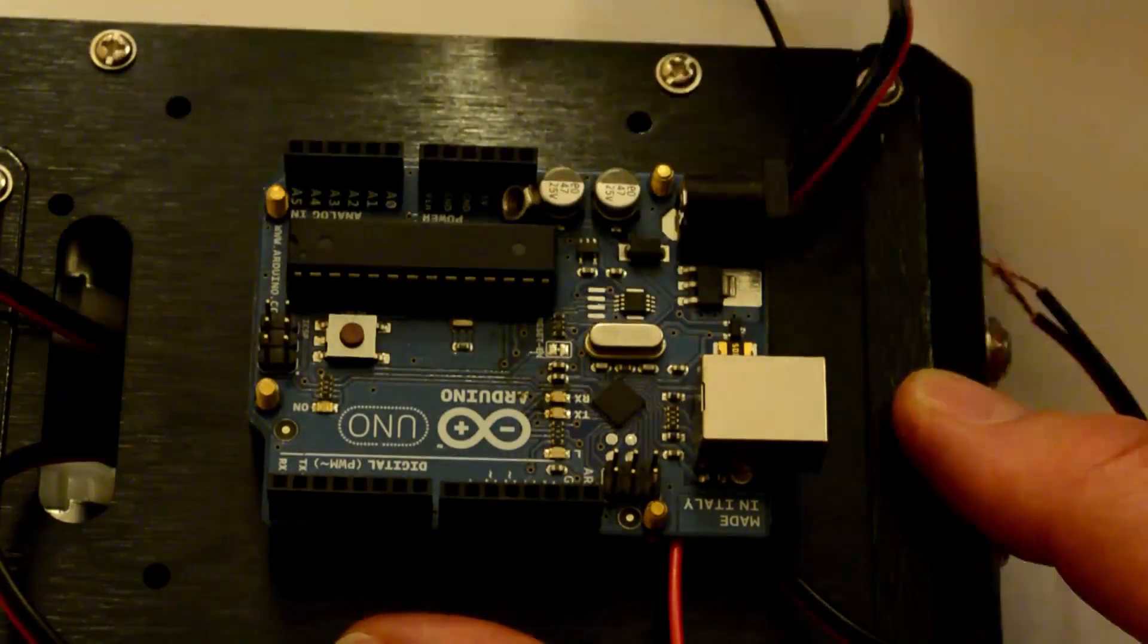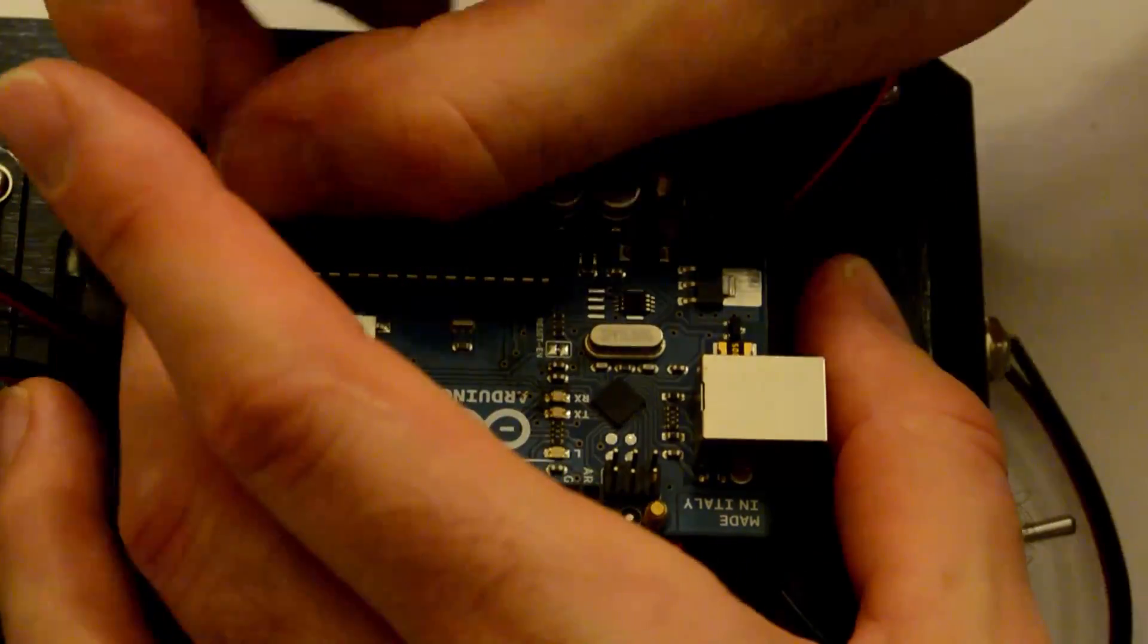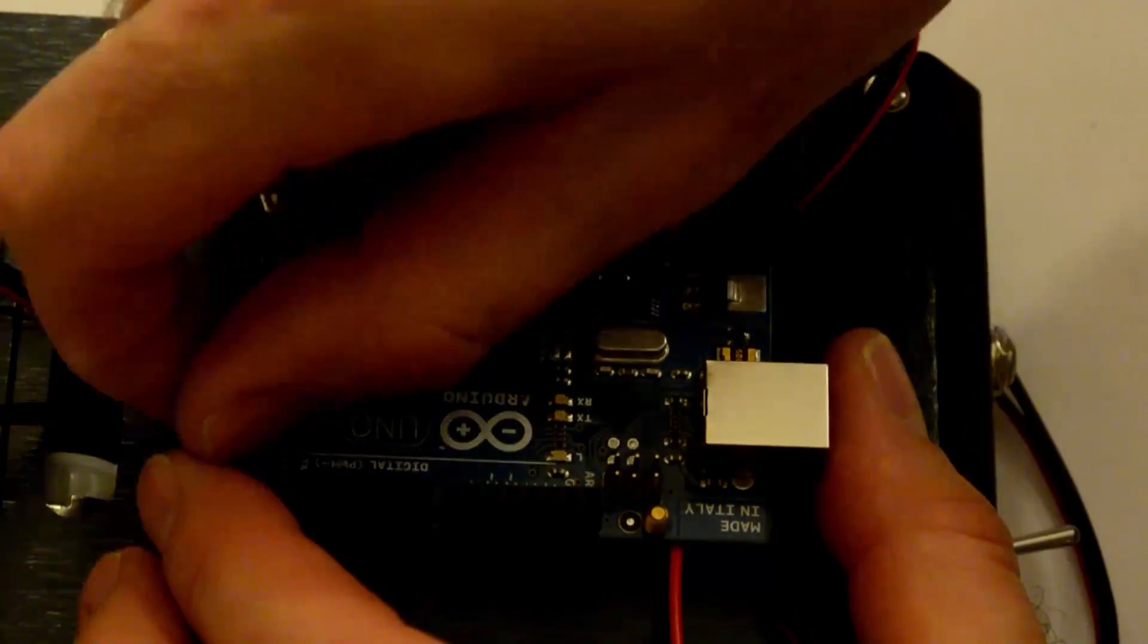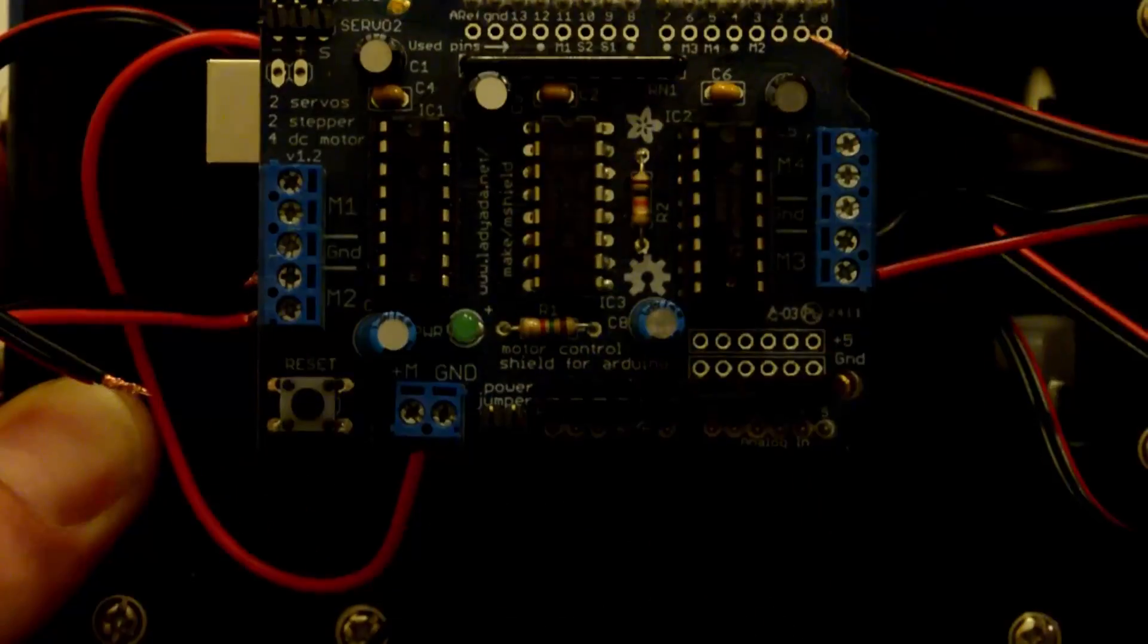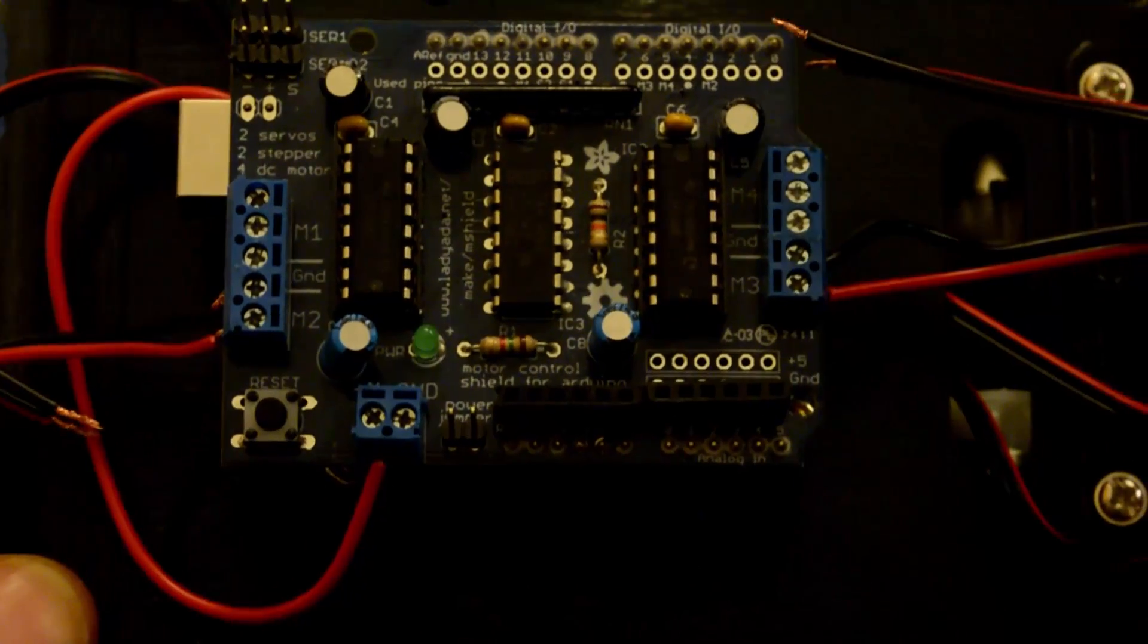First, place your Arduino board on the standoffs. I was only able to get the front two nuts on the board securely. The other two had components in the way and I couldn't screw the nuts down, but the Arduino was still really snug, so it really didn't matter to me. So now you'll want to connect in your motor controller shield on top of the Arduino. It should fit in the pins on the Arduino board.